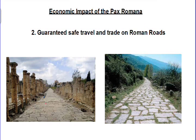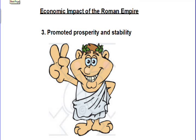It's pretty impressive that these roads are still standing in places almost 2,000 years later — pretty cool. The third economic impact was prosperity and stability. Stability means it's not fluctuating, not moving back and forth. Everything was going well and they had a steady period of growth.